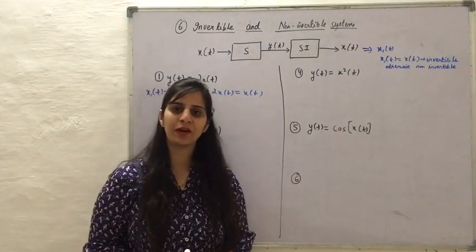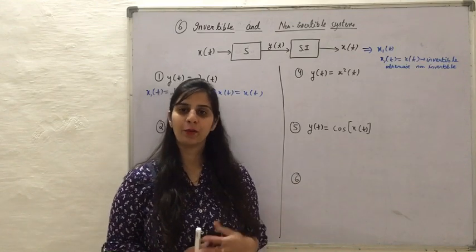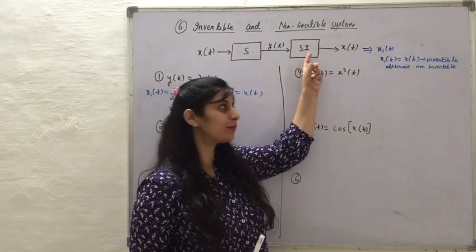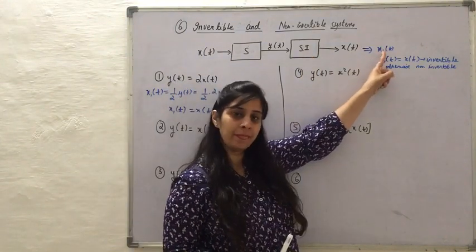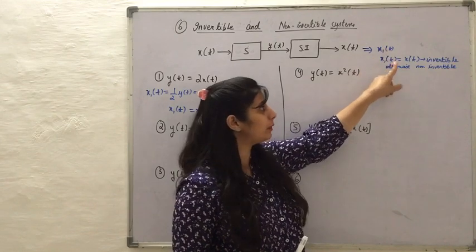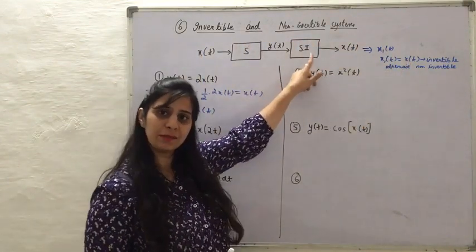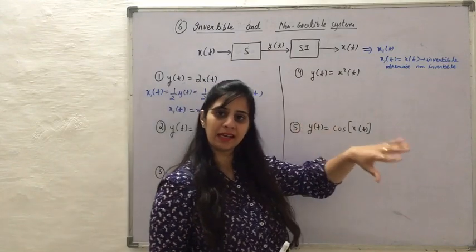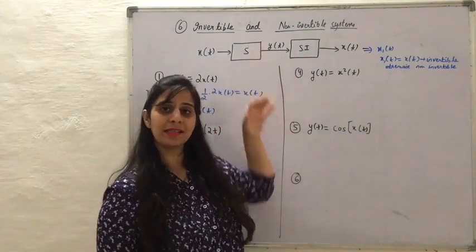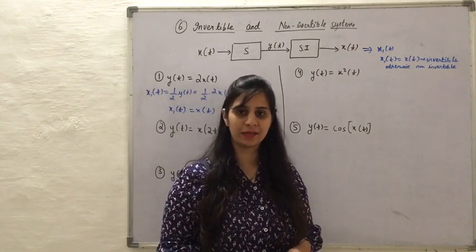To explain invertible and non-invertible systems with examples, I am considering the response of the second system to be X1t. If this X1t comes out to be equal to Xt — meaning the inverse system is producing a signal equal to the original signal — then system S is an invertible system. Otherwise, it is a non-invertible system.